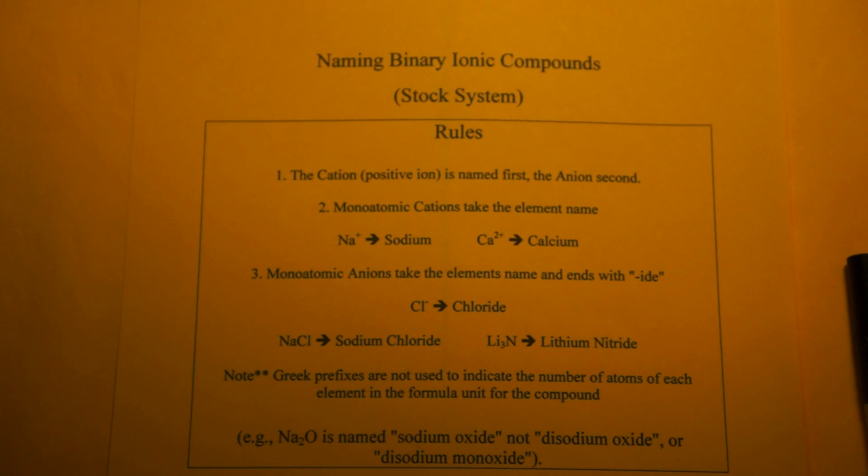Monoatomic cations take the name of the element, so the first name is just the element. Like Na+ is going to be called sodium, Ca2+ is going to be called calcium.